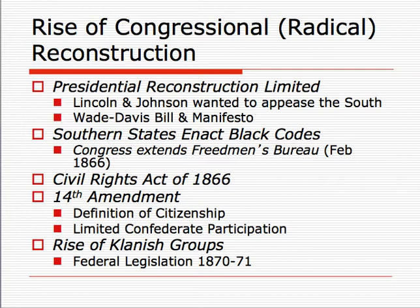When the Southern states enacted Black Codes—attempts at keeping former slaves in their prior conditions—these restricted property rights, restricted who they could associate with, and tried to keep freedmen in the status of being slaves. In response, Congress extended the reach and length of the Freedmen's Bureau. Johnson opposed it. They then passed the Civil Rights Act of 1866, the first Civil Rights Act in American history. Again, Southerners and Johnson opposed it.